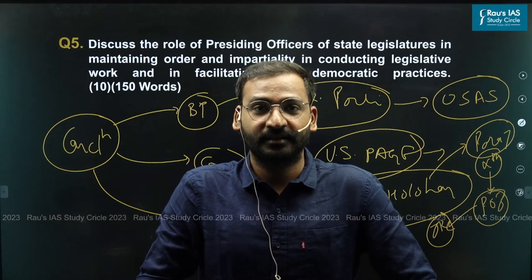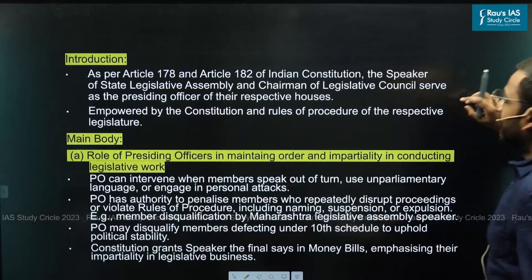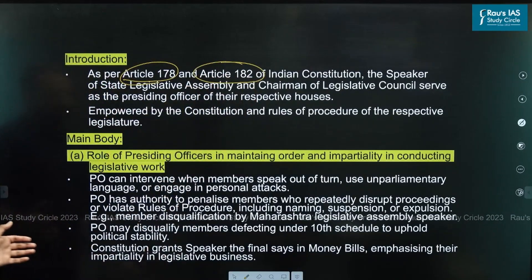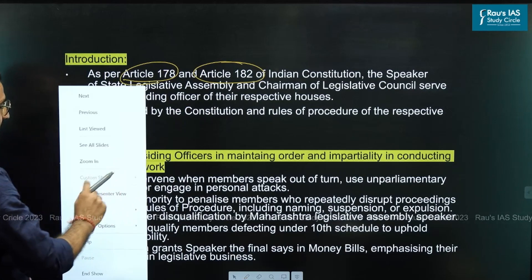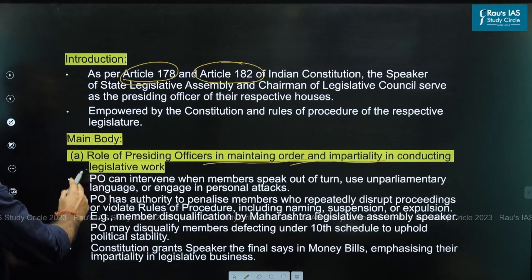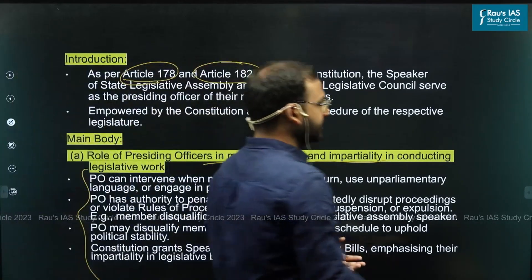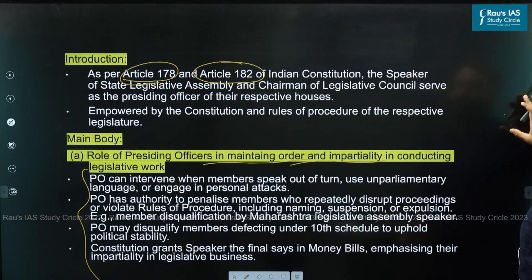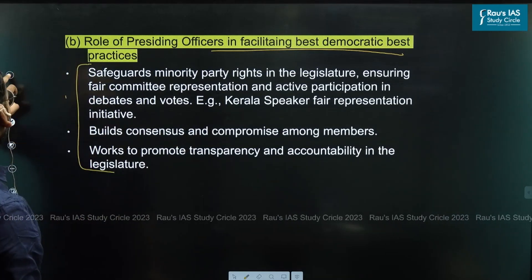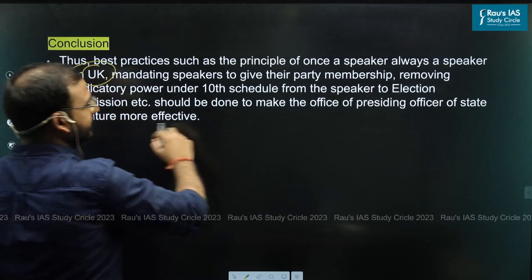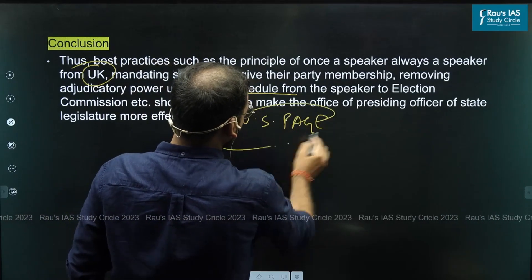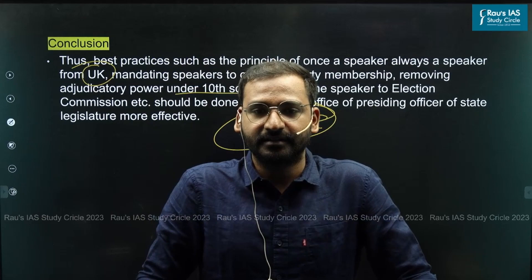This was one possible model answer for this question. Now let's see the model answer through slides. As we already discussed, you can write about Article 178 and Article 182 in the introduction. In the main body, divide your answer into two parts: first, maintaining order and impartiality in conducting legislative work; second, facilitating best democratic practices. In conclusion, you can write about the UK's practice, the 10th schedule, or the VS Page Committee. With this, we conclude our discussion. Thank you.